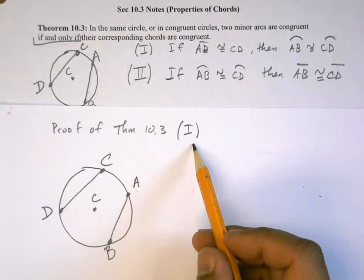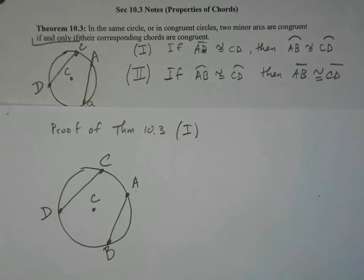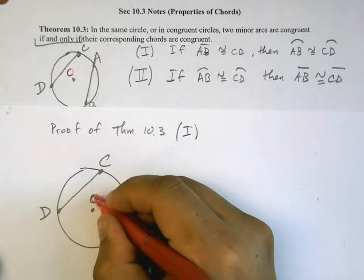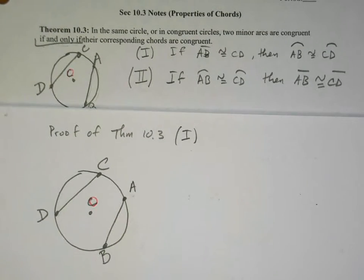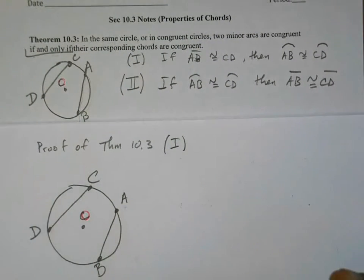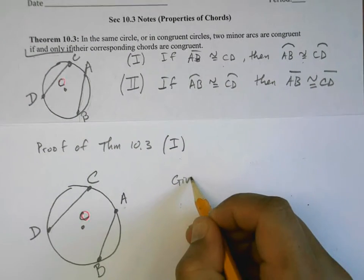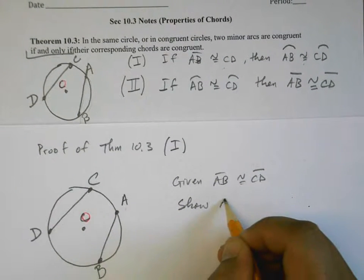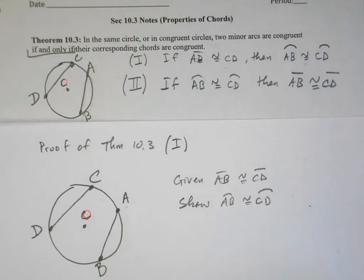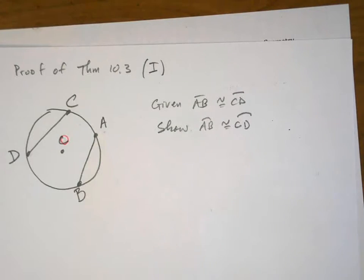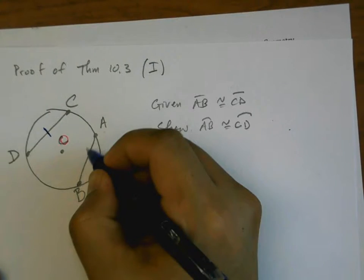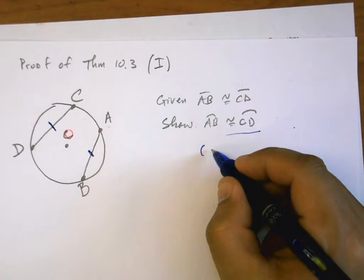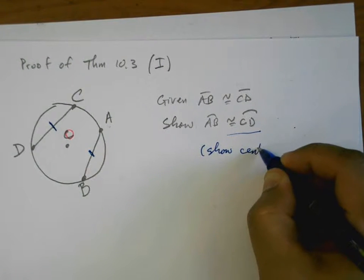I've copied the same picture and I'm going to prove statement one. I realize I named the circle center C and also a point C, which is confusing, so I'm going to call the center O instead. For part one, the 'if' part is the given and this is what we want to show. Given: AB is congruent to CD. Show: arc AB is congruent to arc CD. I'll mark the given parts — showing the two arcs are the same is really the same as showing the central angles are the same.